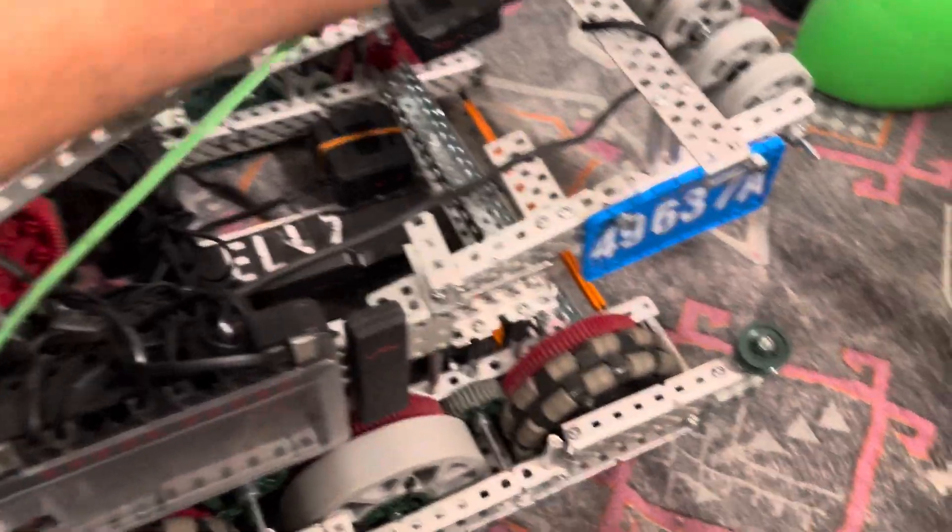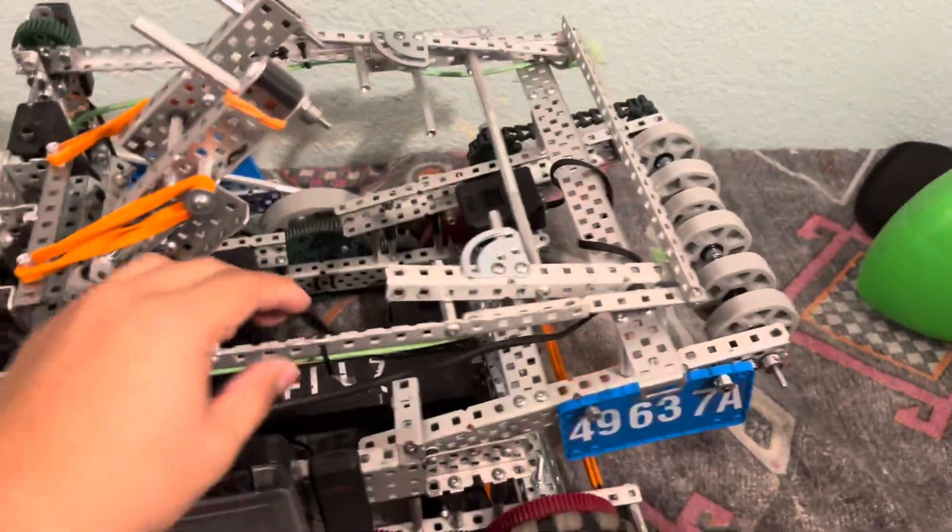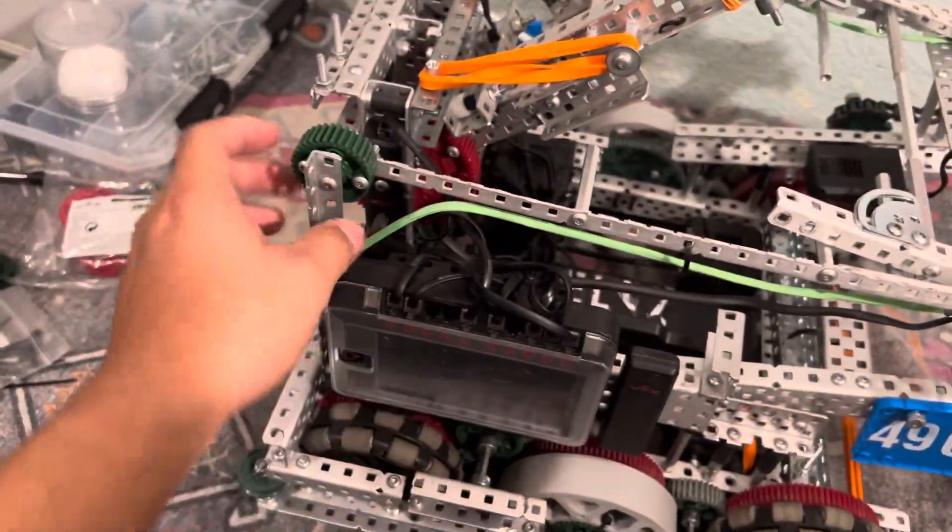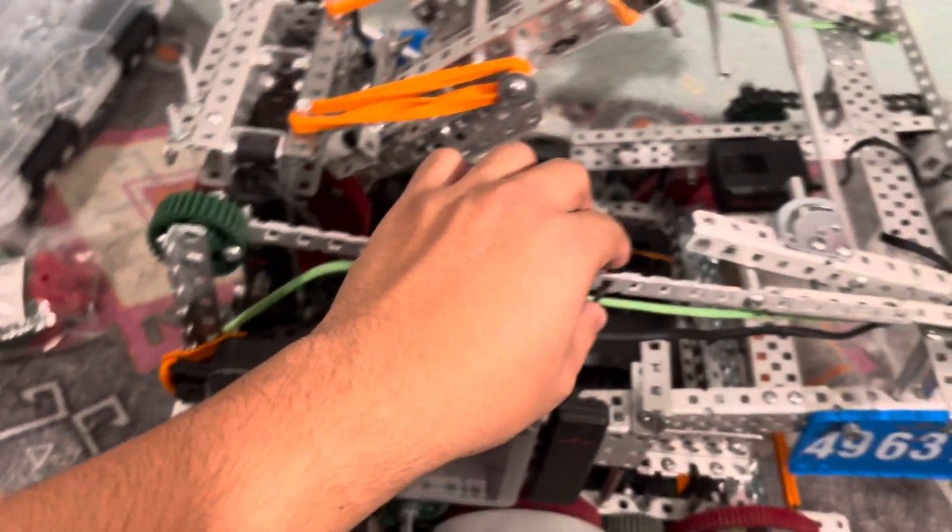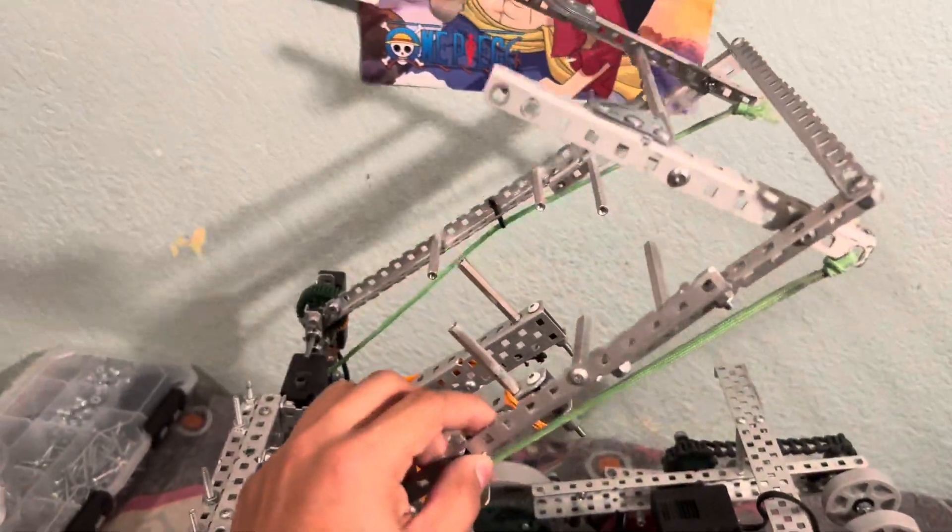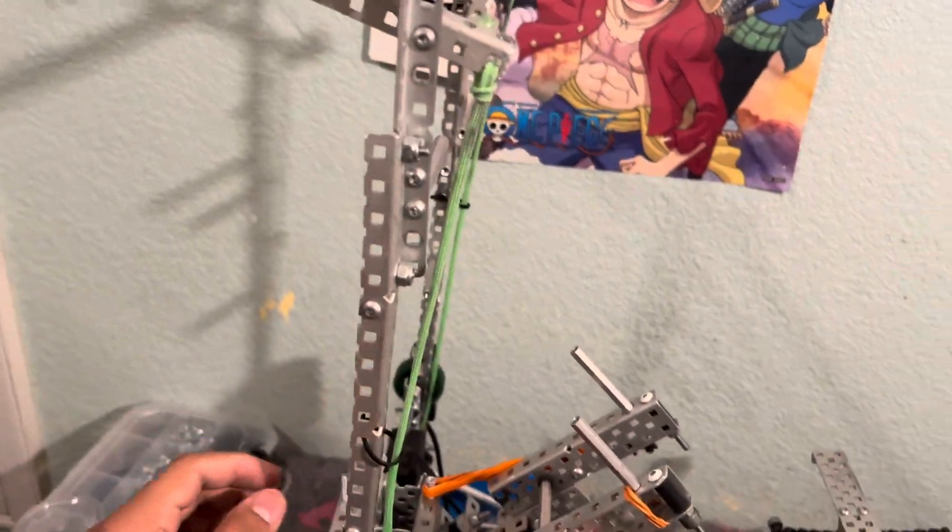And the way it blocks is, so when this thing pulls up, the string kind of holds on to this and pulls it, so the string becomes tight as soon as it goes higher, and it just turns into like a hood.